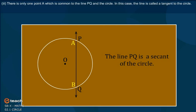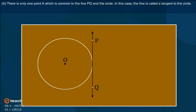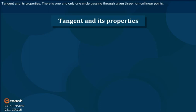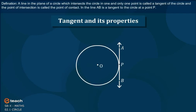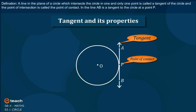Now the third possibility: there is only one point A which is common to the line PQ and the circle. In this case, the line is called a tangent to the circle. A line in the plane of a circle which intersects the circle in one and only one point is called a tangent to the circle, and the point of intersection is called the point of contact. In the figure, line AB is a tangent to the circle at point P.